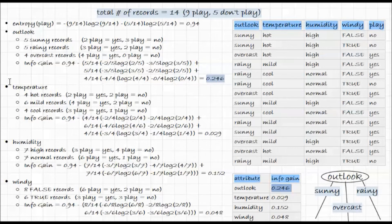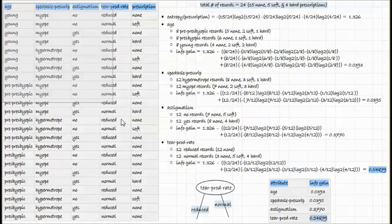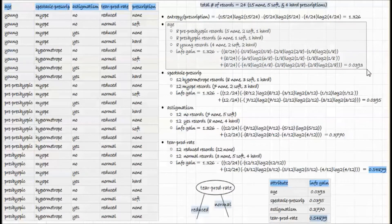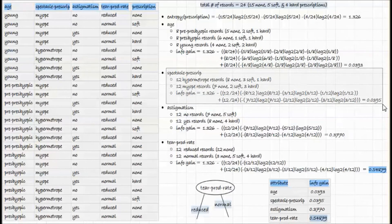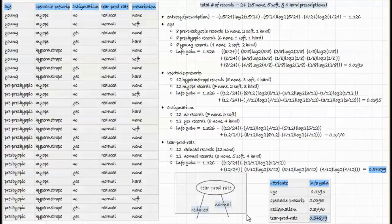We do the same calculation for temperature, humidity, and windy. The information gain for outlook is the highest, so we split on outlook. For the contact lenses dataset, we perform the same calculation — computing the entropy for the dataset and the information gain for each attribute — and it turns out that one particular attribute has the highest information gain, so that is the one we choose to split on.